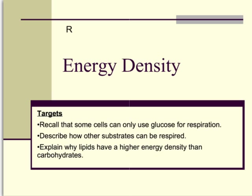This is Run For Your Life Lesson 5. So far we've looked at the skeletal and joints, muscles and sliding filament theory, respiration including chemiosmosis and glycolysis, Krebs cycle and the electron transport chain.